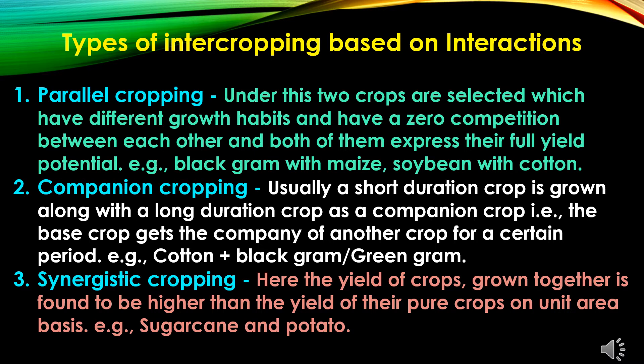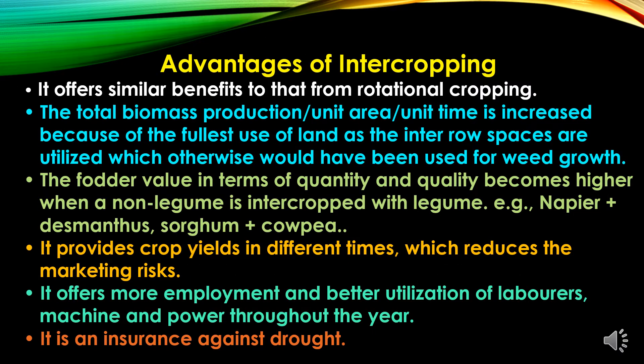The second is companion cropping — usually a short-duration crop is grown along with a long-duration crop as a companion crop. The base crop gets the company of another crop for a certain period, like cotton plus black gram or green gram. The third is synergistic cropping, where the yield of crops grown together is found to be higher than the yield of their pure crops on a unit area basis, like sugarcane and potato.